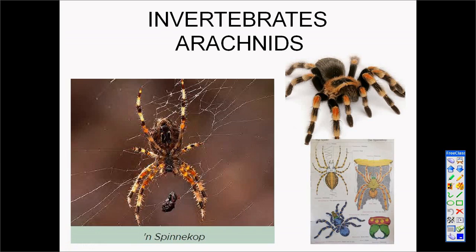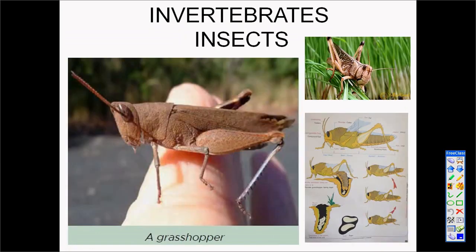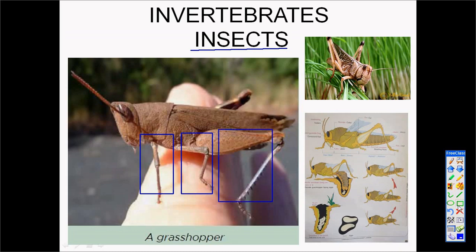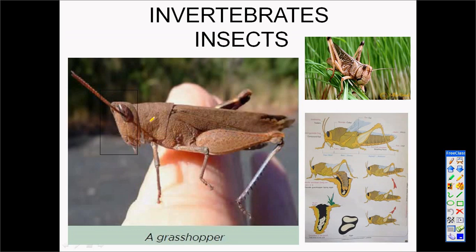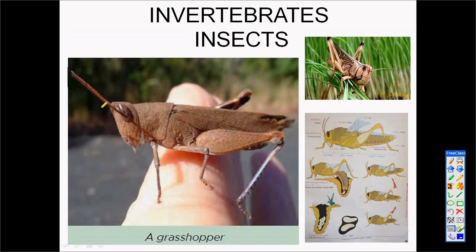The next animal we are going to look at is insects, and we're going to look at the grasshopper. Insects are known by the six legs they have. Grasshoppers are divided into three parts: the head, the thorax, and the abdomen. Looking at the head, they have feelers or antennae that help them sense spaces. They have three small simple eyes and two compound eyes, each consisting of many smaller eyes.